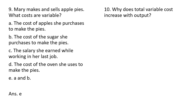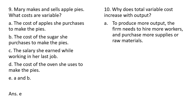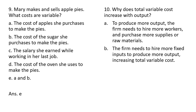Question ten: why does total variable cost increase with output? To produce more output, the firm needs to hire more workers and purchase more supplies and raw materials — that is correct. The rest of these answers are incorrect. So answer choice A.